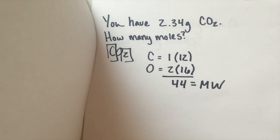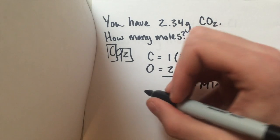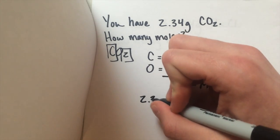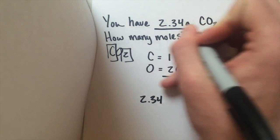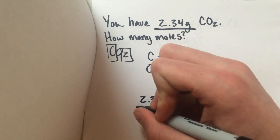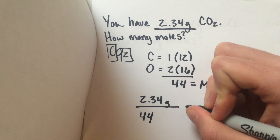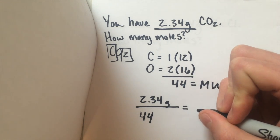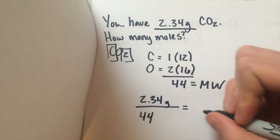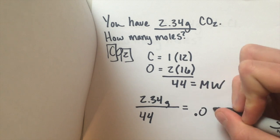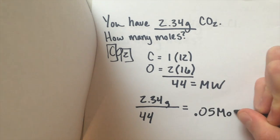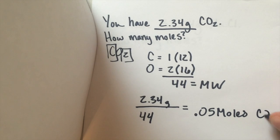So once you have the molecular weight, all you do is you take your starting weight, 2.34 grams, and you divide that by your molecular weight, and that will leave you with moles. So for this, you get 0.05 moles of CO2.